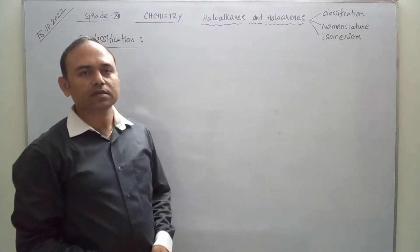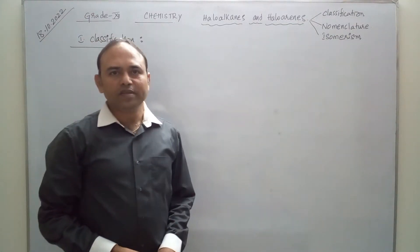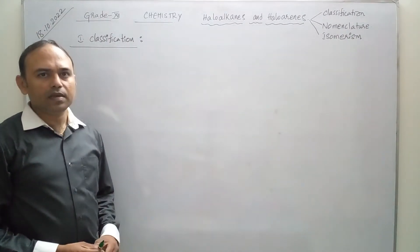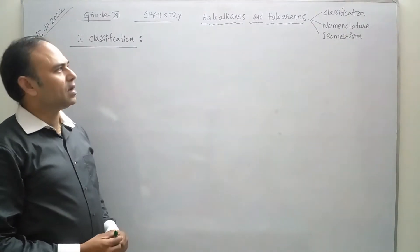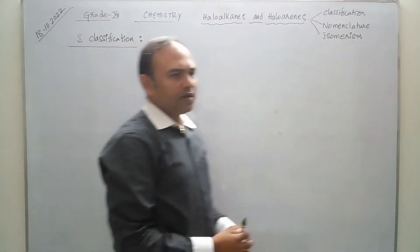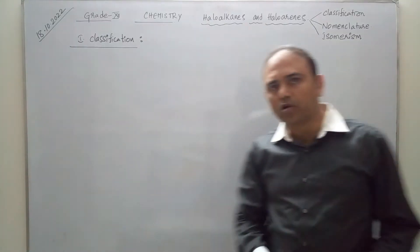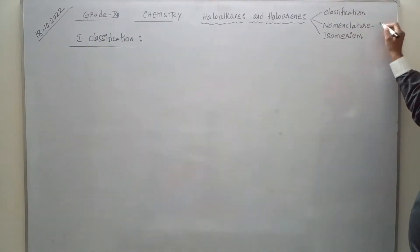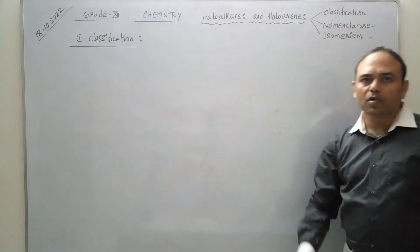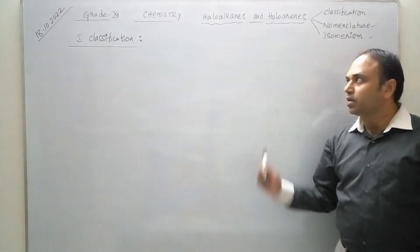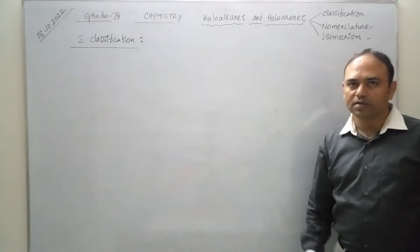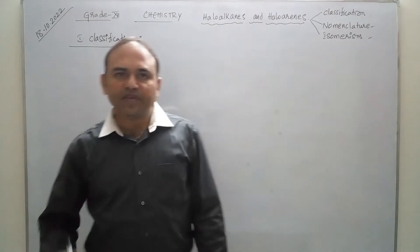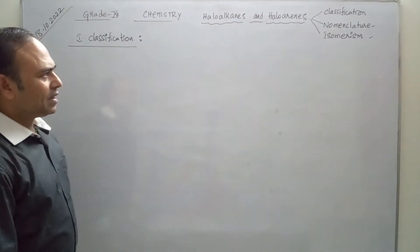Good evening students. Today's topic is grade 12 organic chemistry: haloalkanes and haloarenes. In this we are going to discuss about the classification, nomenclature, and isomerism of haloalkanes and haloarenes.